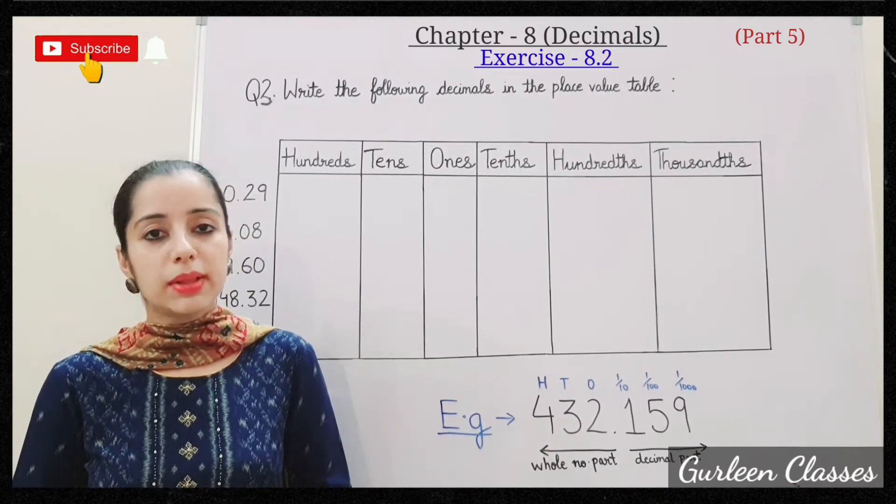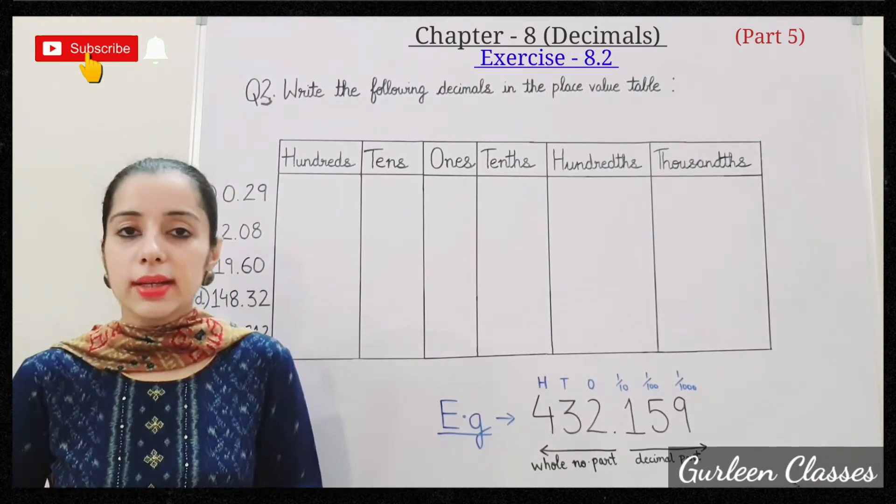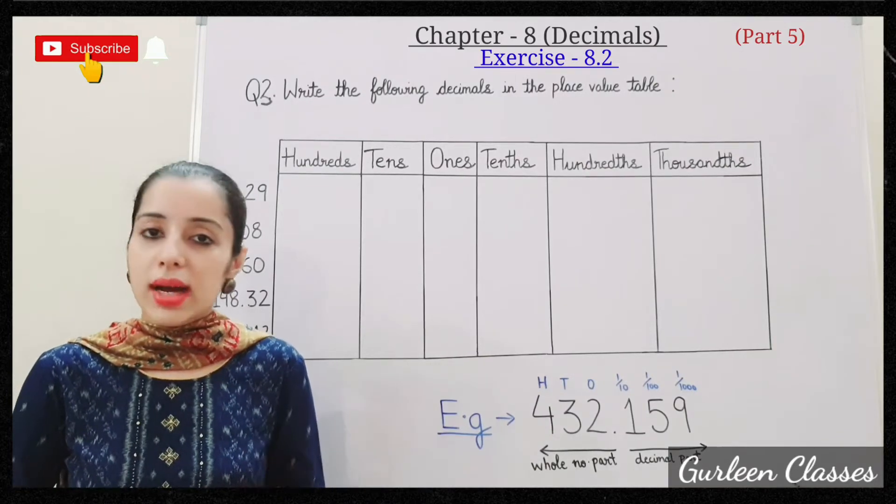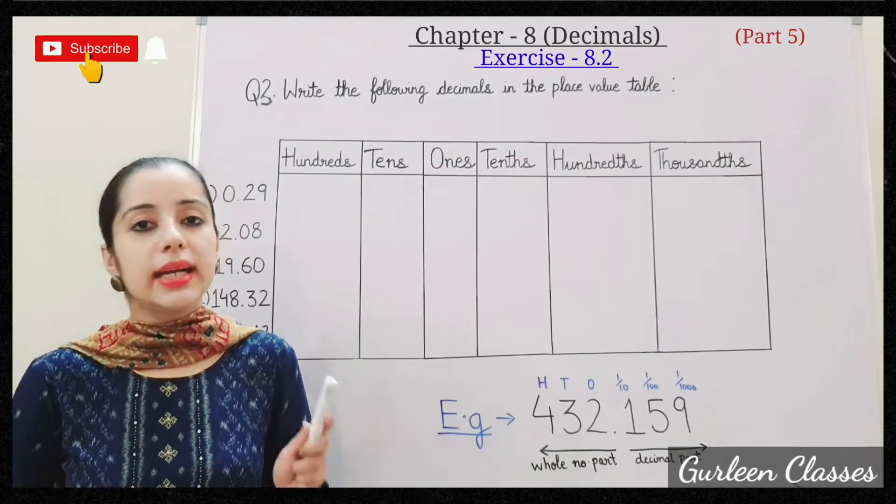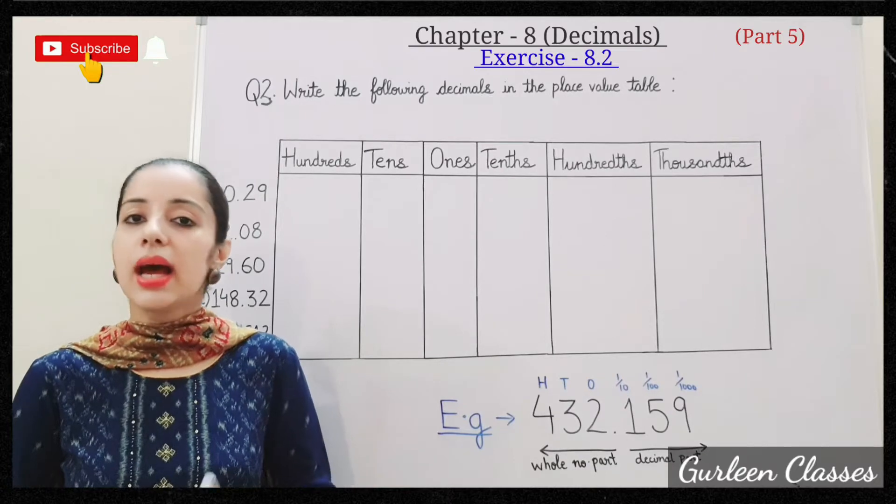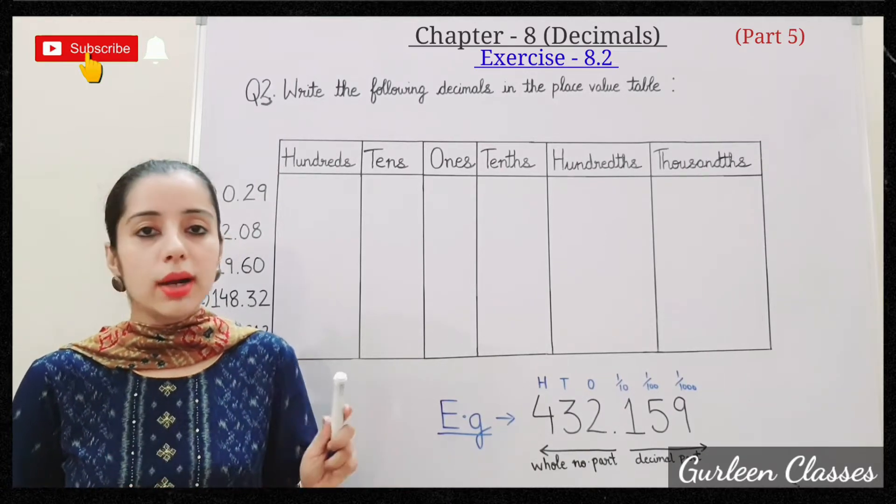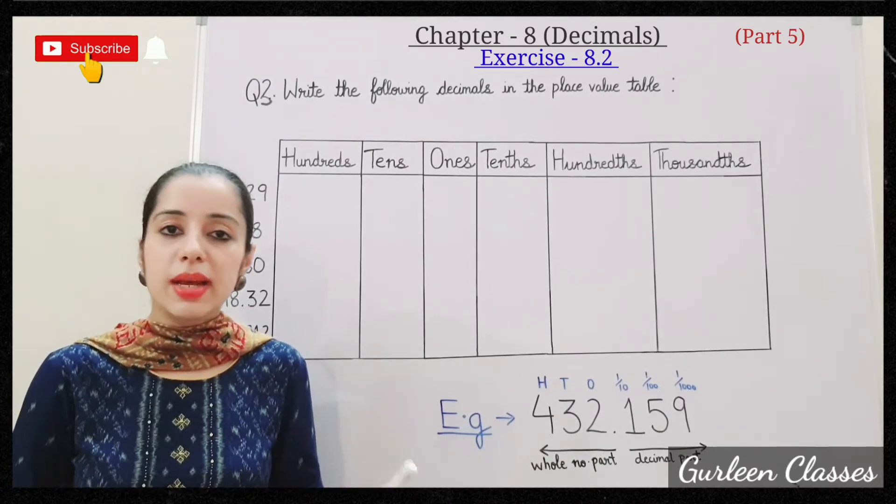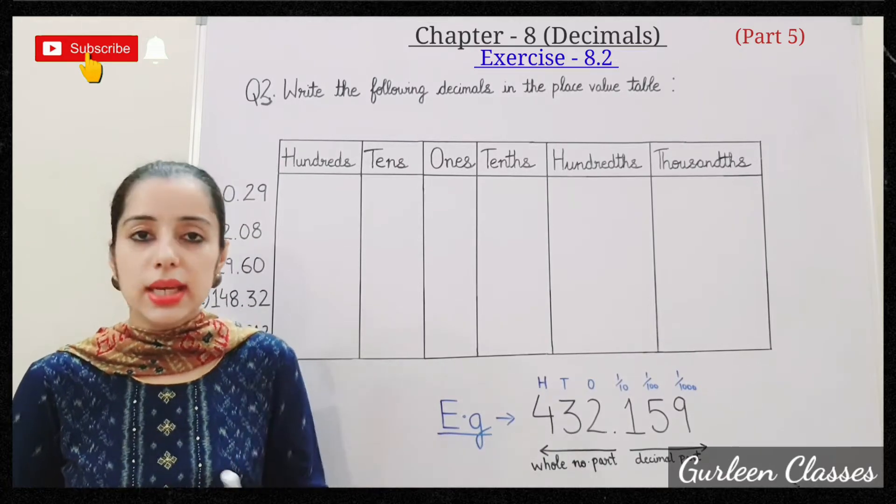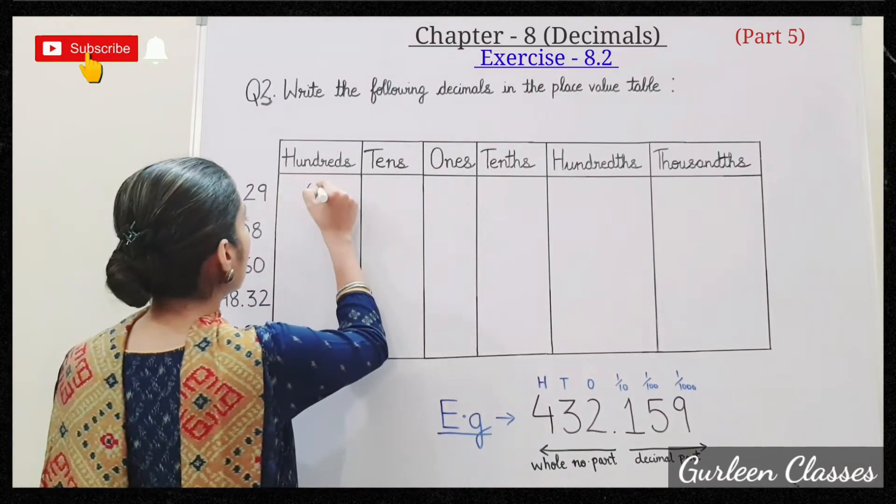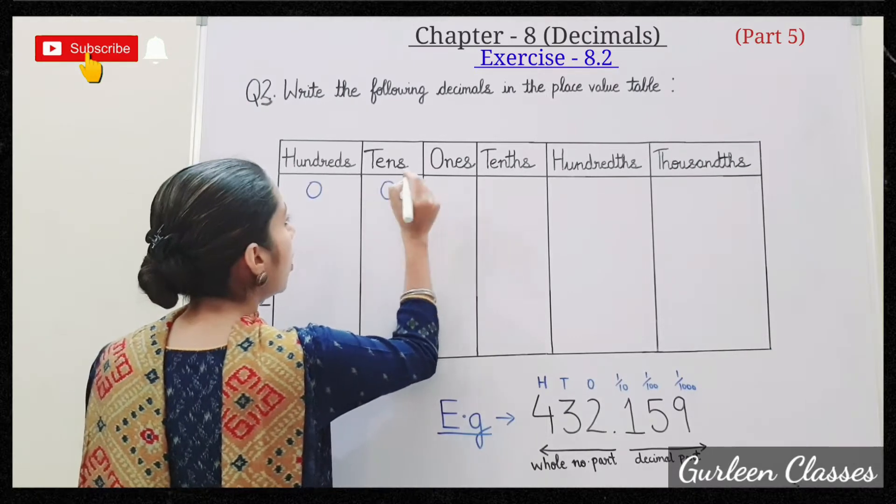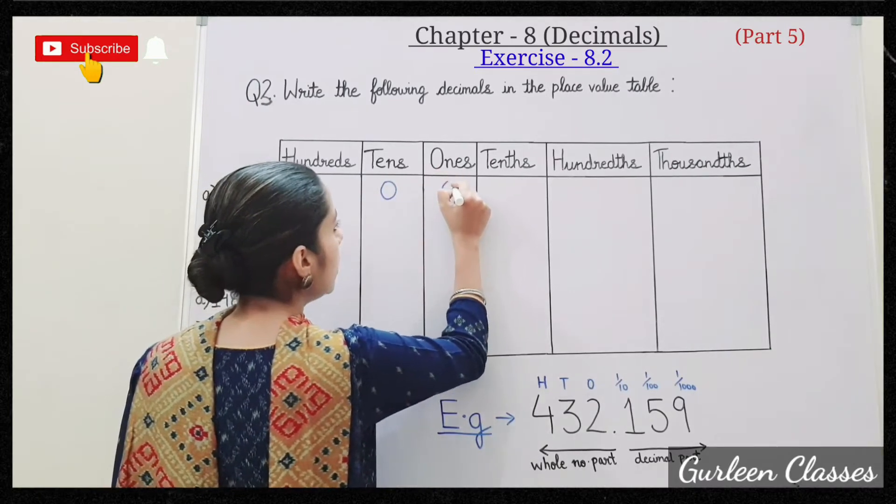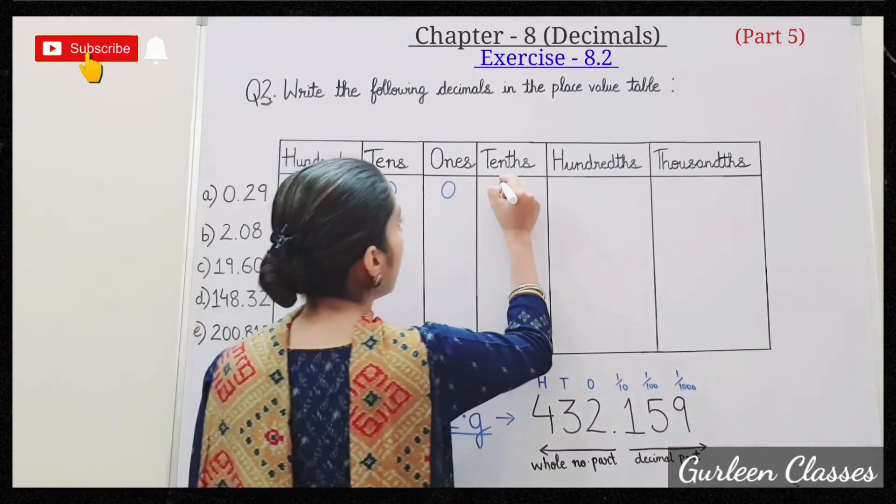So now let us locate these decimal numbers in the place value table. A: 0.29. So 0 is at ones place, 2 is at tenths place and 9 is at hundredths place. We do not have any number in the hundreds place and tens place so it will be 0. So write here 0, 0, ones place we have 0, tenths place we have 2.